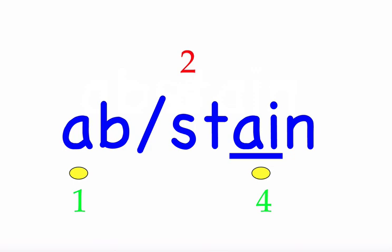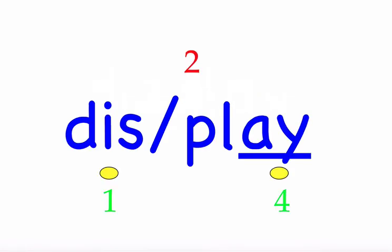The next word is 'display.' He tried not to display his emotions. First syllable 'dis' — three sounds, D-I-S. Second syllable 'play' — three sounds, P-L-A-Y. Mark the word. Display.